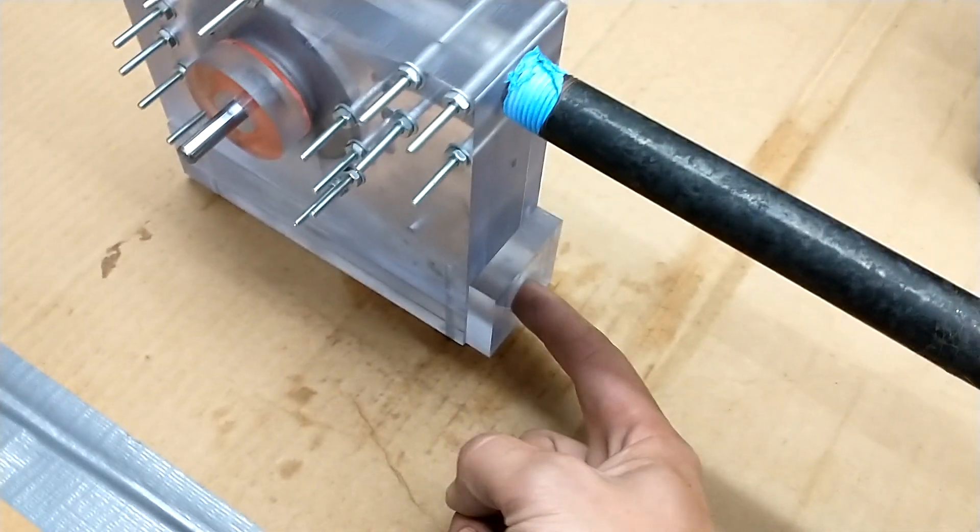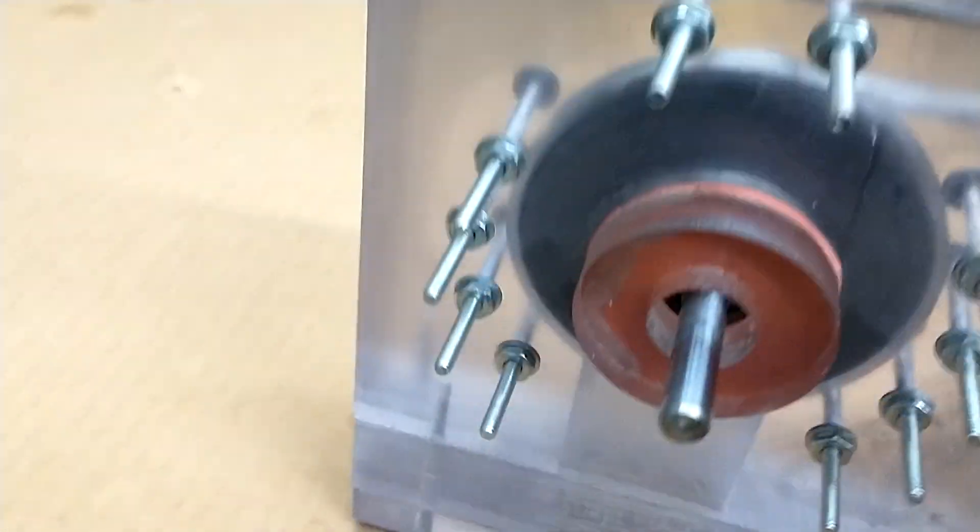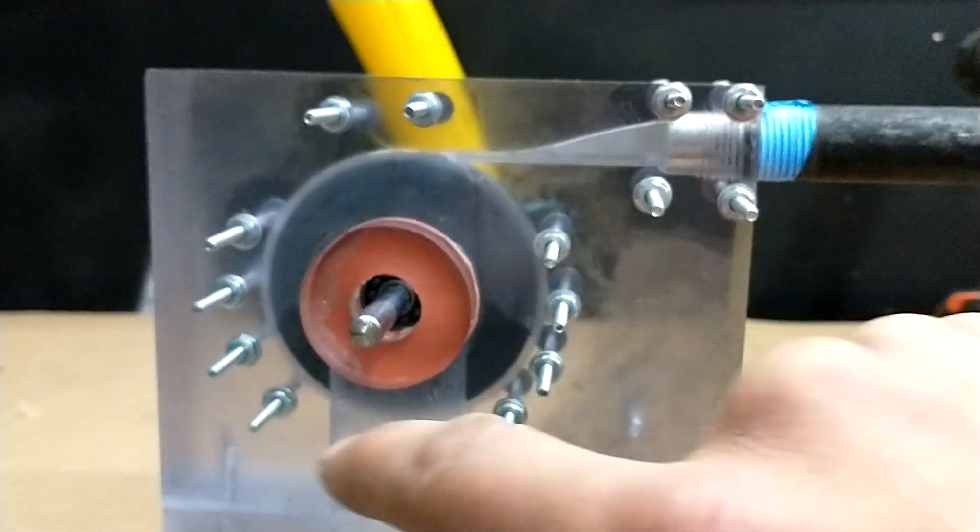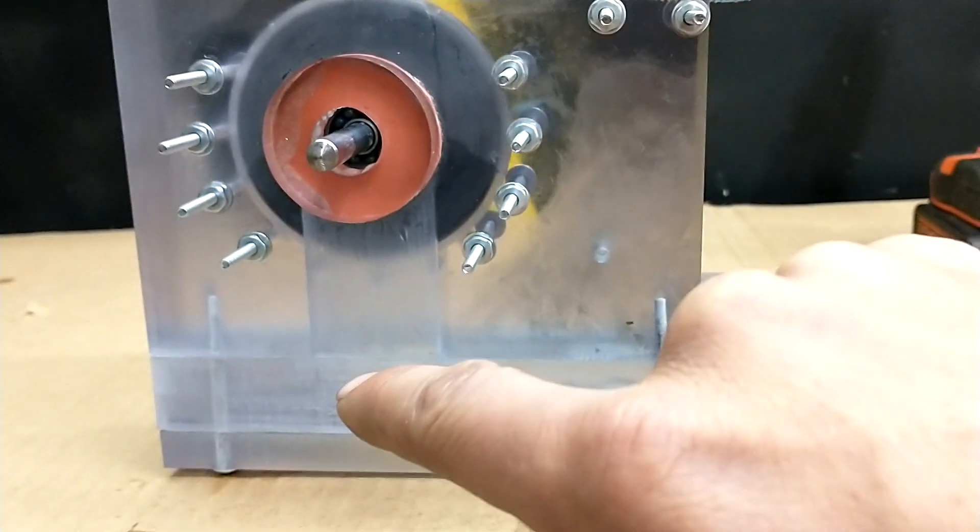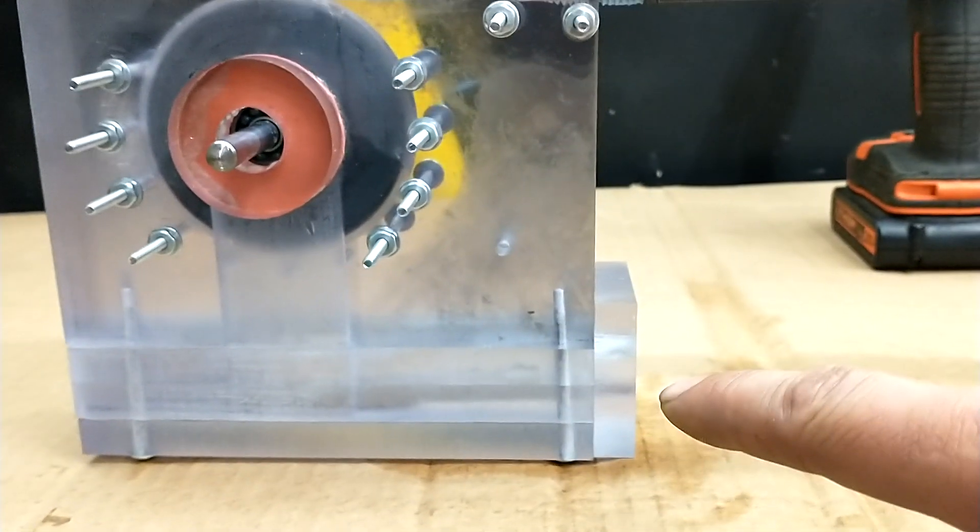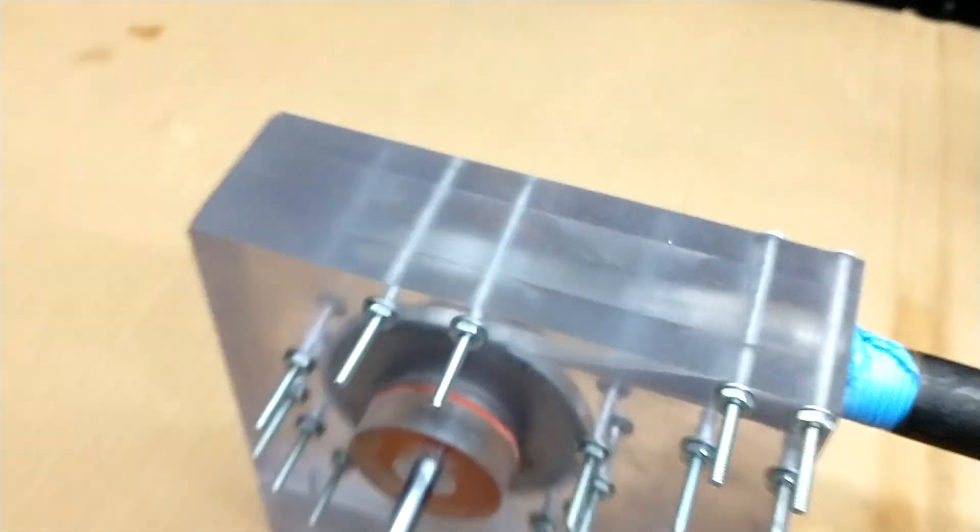The exhaust is right here. So it goes in, spirals around, it goes out the exhaust here, into this chamber, and then out of this chamber, out the exhaust. It does that on both sides.